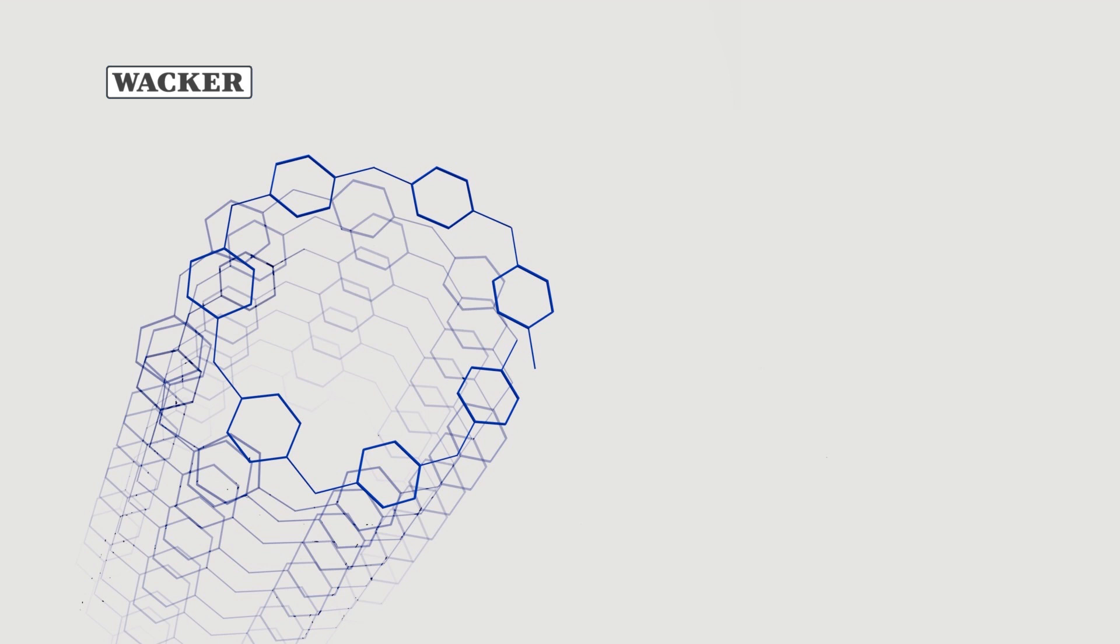On a very basic level, starch molecules can be visualised as spirals. They consist of multiple glucose molecules bonded together.